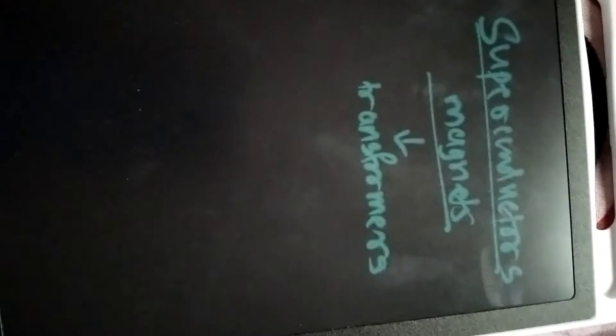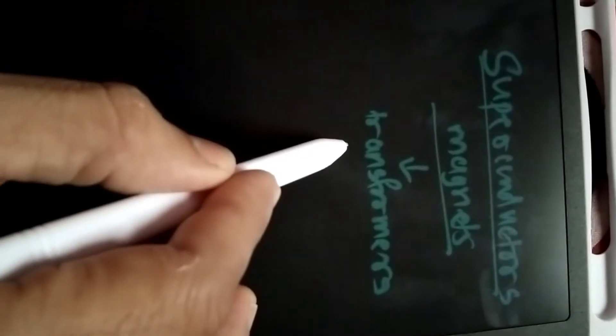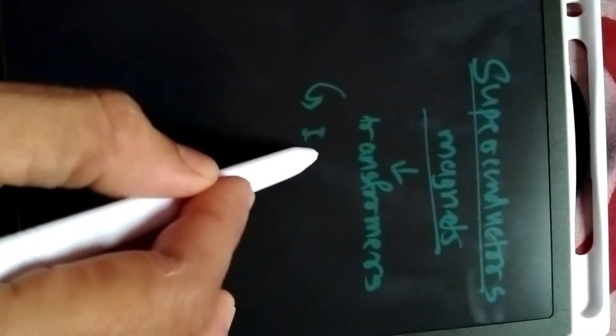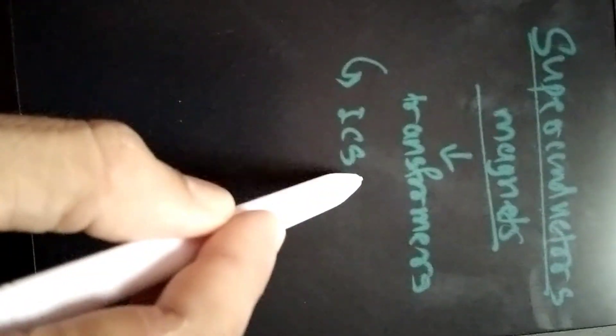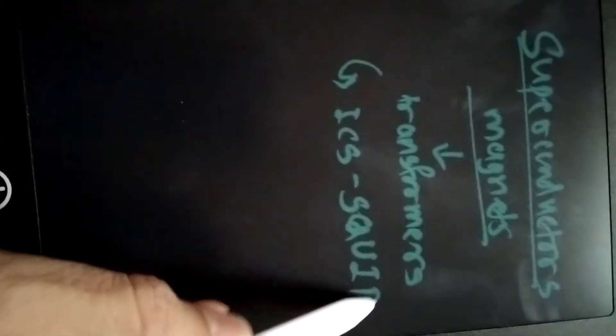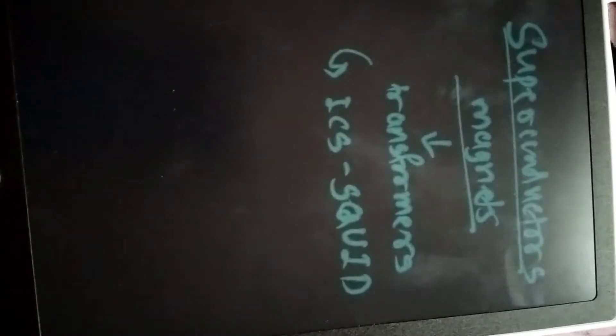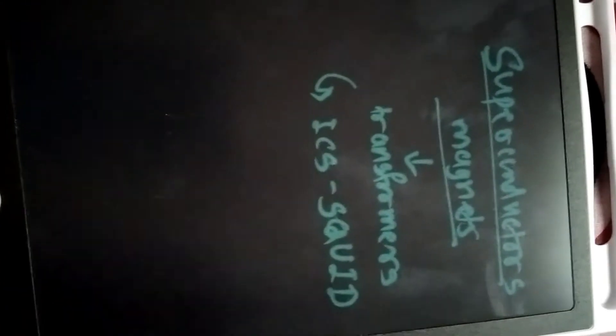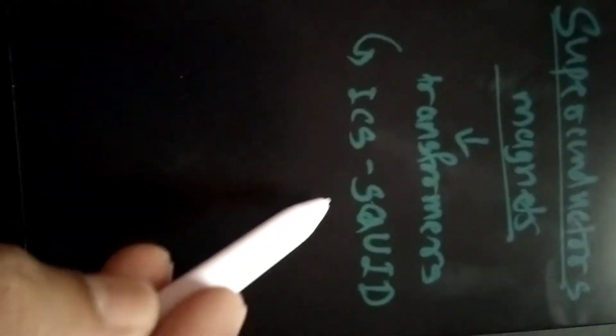Superconductors can also be used in electronic devices, ICs of some computers, and magnetic devices. They are used in SQUID — superconducting electronic gadgets and devices with higher magnetism — where there are electronic storage applications in specialized devices.